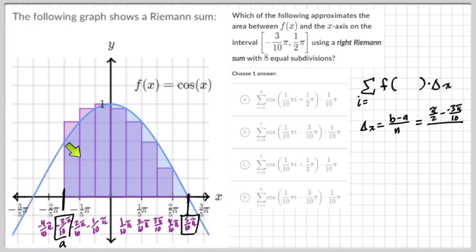You count seven rectangles, but our last rectangle is like a line because it says eight equal subdivisions, so we have to divide it by eight.